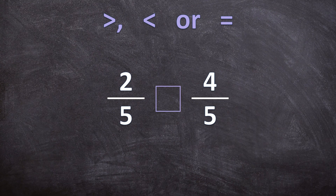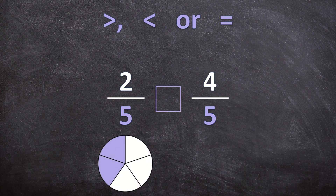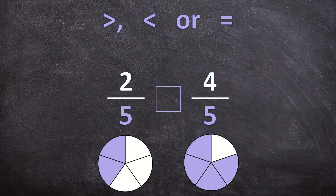Let's start really easy. In this example our denominators are the same. So this means if we have circles, both of our circles are going to be divided into five equal pieces, but the one circle is going to have two colored-in pieces and the other circle is going to have four colored-in pieces.